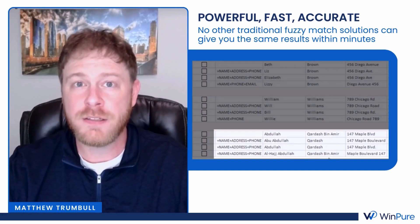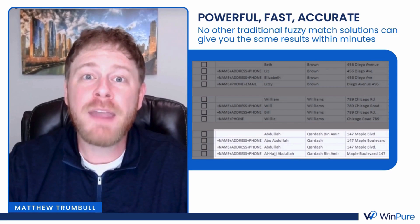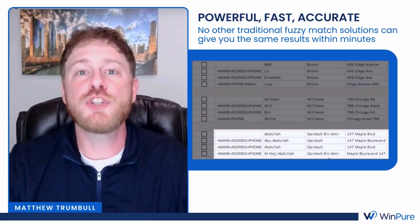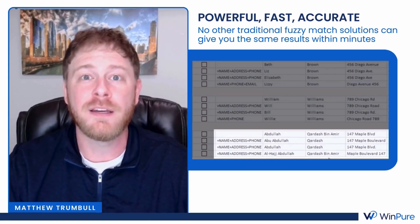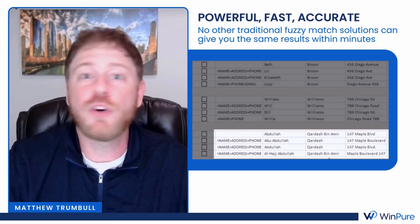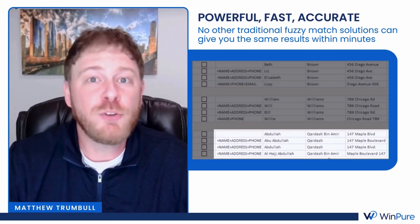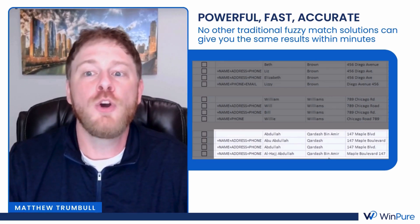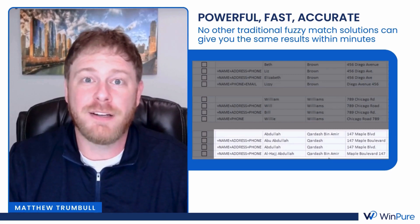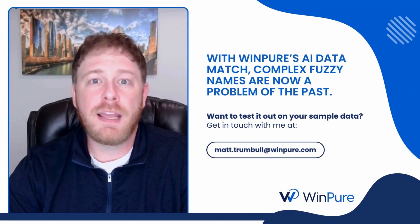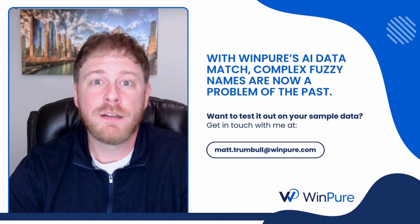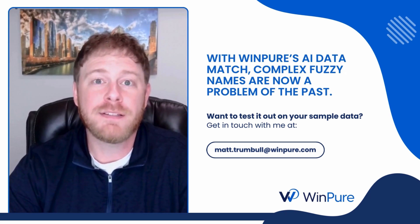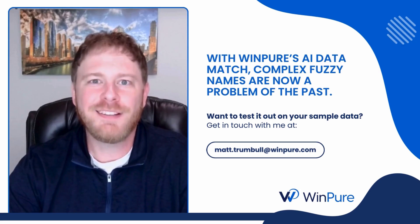Within our tool we have a global database of over 800 million name variations to ensure you catch all your matches on the first try. The best part — you don't even have to code or tweak any algorithm. You don't even have to manually prep your data within Excel, because the AI data matching works equally well with semi-structured data. Never let complex names affect the quality of your database again — with WinPure's AI Data Matching tool, complex fuzzy names are now a thing of the past. Want to test it out on your data? Get in touch with me here.